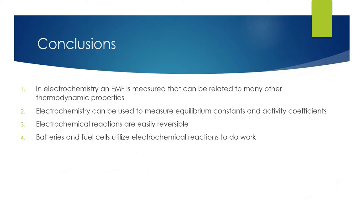That concludes our discussion of electrochemistry. To summarize: we can measure an EMF — an electromotive force — as our standard electrochemical potential E naught, and relate it to thermodynamic properties like Gibbs free energy, entropy, enthalpy, and equilibrium constants. These measurements are easy to obtain with a voltmeter across two half cells, giving us equilibrium constants for both very favorable and very unfavorable reactions, as well as activity coefficients for dissolved ionic species. Electrochemical reactions are also easily reversible by applying a strong negative voltage, enabling battery recharging and more efficient energy use than combustion engines.